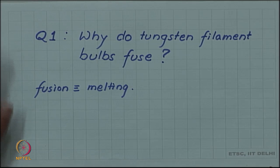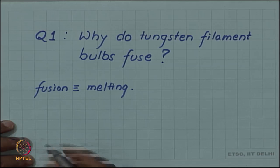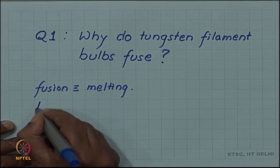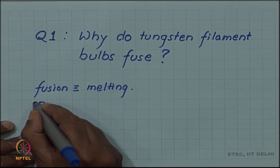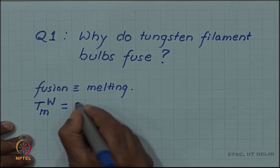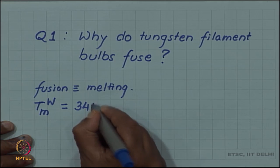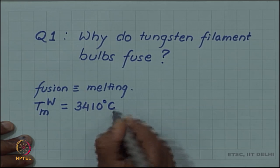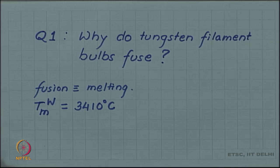Now fusion as such means melting. But does the bulb filament really melt? Filaments are made of tungsten and the melting point for tungsten is about 3410 degrees Celsius, that is a very high temperature. If that sort of temperature can reach in the filament, not only the filament but many other components could also melt, but that does not happen.